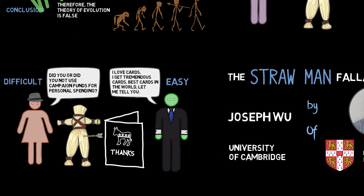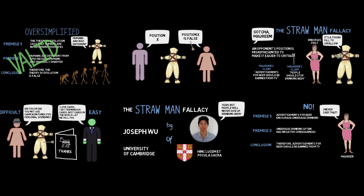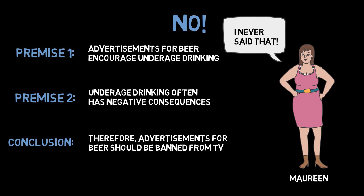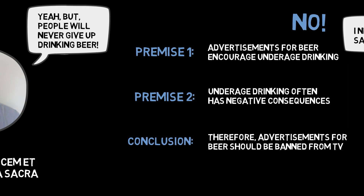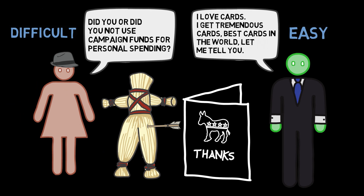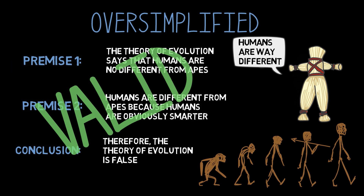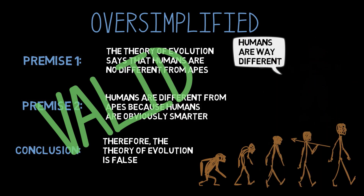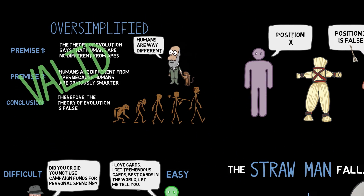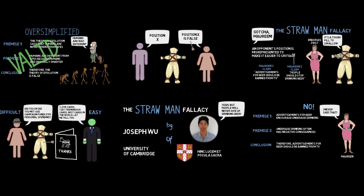Strawman fallacies are everywhere, and you've probably come across variations of the examples presented here in your everyday life. Sometimes strawman fallacies are intentional, which is often the case in politics. But other times they are unintentional, like when someone genuinely misunderstands an opponent's claim. In order to keep discussions productive, it is important to grasp the exact position being advanced before proceeding to attack it. Otherwise, you may be guilty of committing the strawman fallacy.